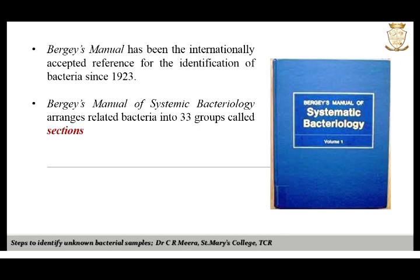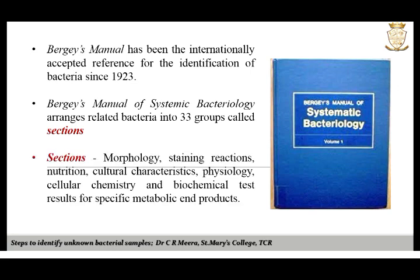Bergey's Manual of Systematic Bacteriology arranges related bacteria into 33 groups called sections, based on interrelations rather than classical taxonomic groupings of phylum, class, order, and family. The interrelationship of organisms in each section is based on characteristics such as morphology, staining reactions, nutrition, cultural characteristics, physiology, cellular chemistry, and biochemical test results for specific metabolic end products.